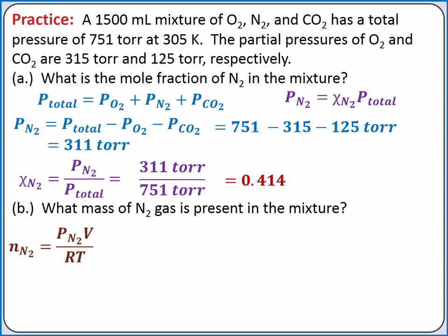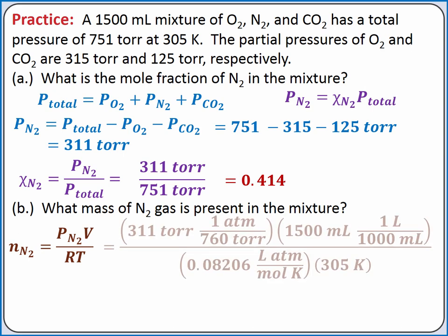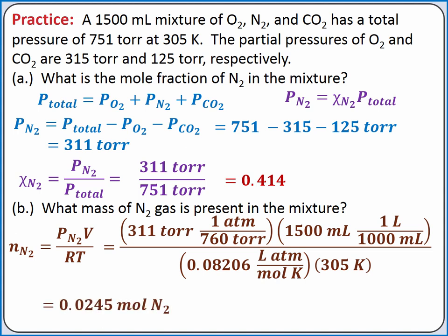We'll need to convert the partial pressure of nitrogen from torr to atmospheres using the conversion factor 1 atmosphere equals 760 torr. We also need to convert 1500 milliliters into liters. Completing our calculation, we should get 0.0245 moles of nitrogen.